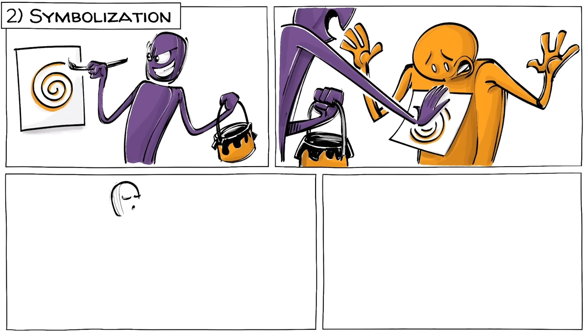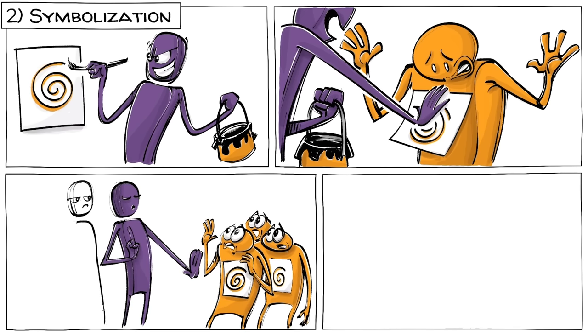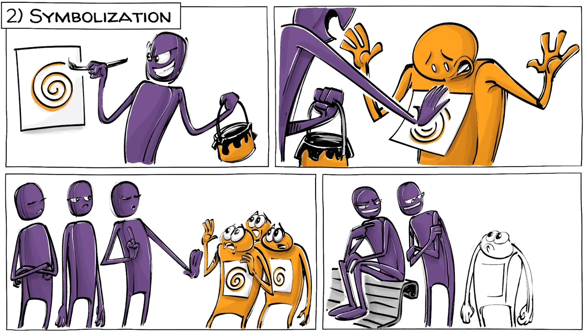The second stage is symbolization. This involves assigning symbols or names to members of the other group. The goal here is to split the society and make it clear who belongs to who.